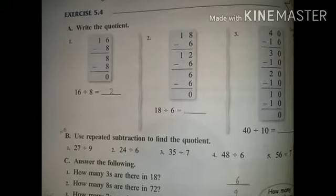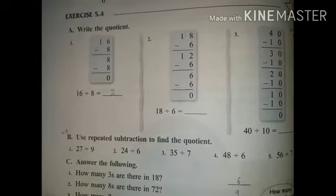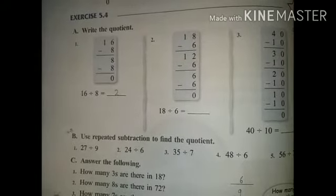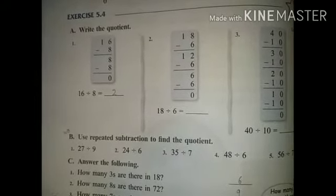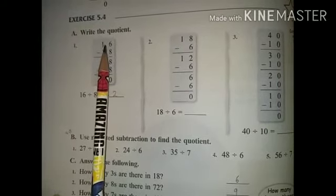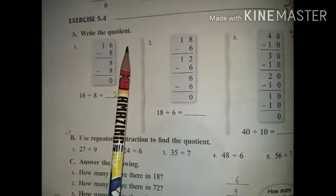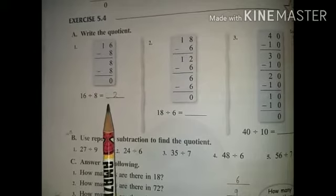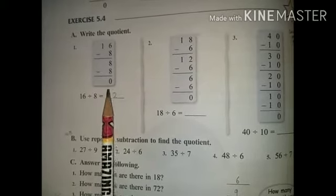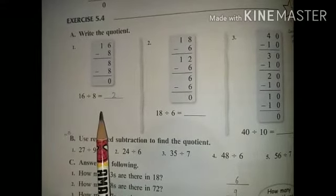I hope you are doing well. Today we are going to start Exercise 5.4. Point A: write the quotient. Questions are given — first, second, third. This is the quotient.